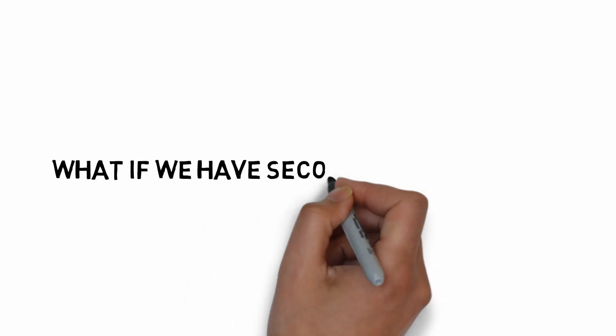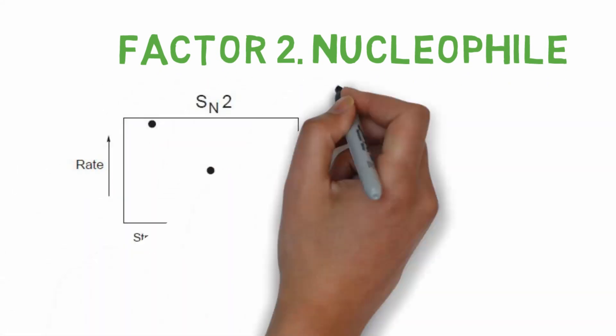But what if we have a secondary substrate? Both SN2 and SN1 can happen. So we move into factor 2, nucleophile.